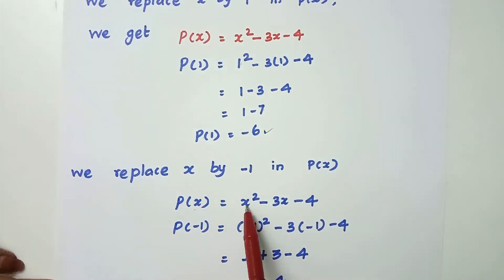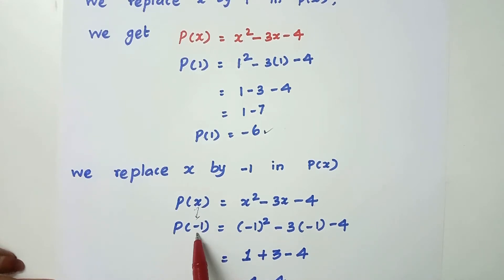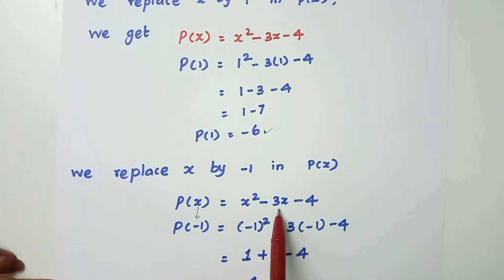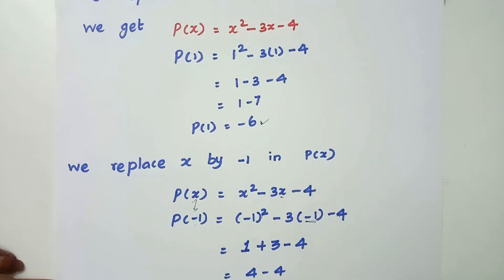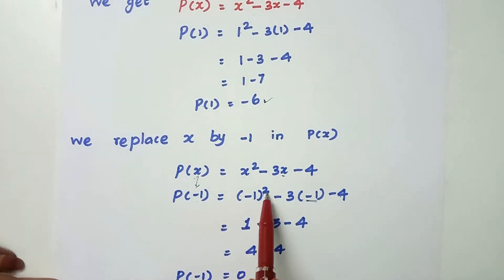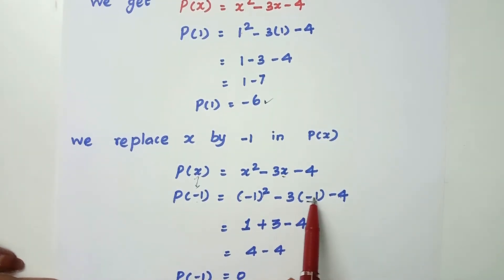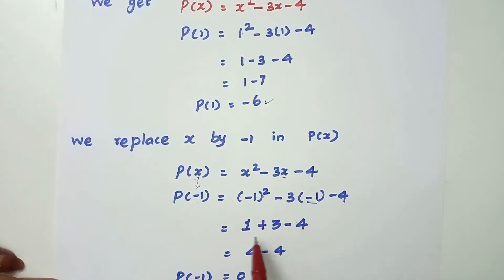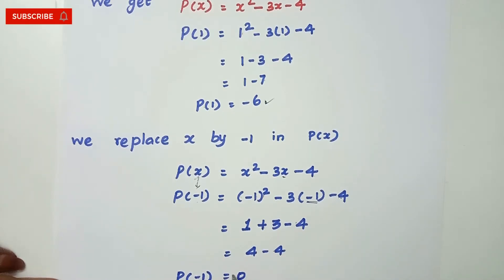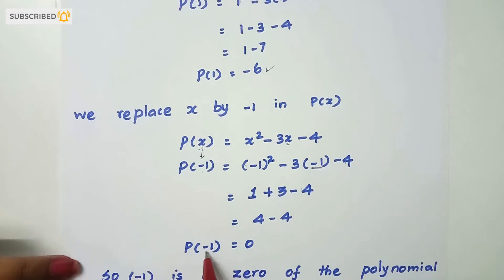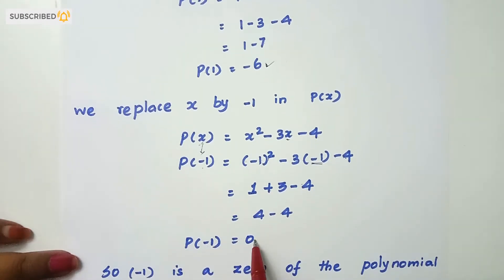Now, p of x is equal to x² minus 3x minus 4. We will replace x by minus 1. So, p of minus 1 equals minus 1 whole squared minus 3 into minus 1 minus 4. Now, minus 1 squared is 1, minus 3 into minus 1 is plus 3, minus 4. So 1 plus 3 minus 4 equals 0.